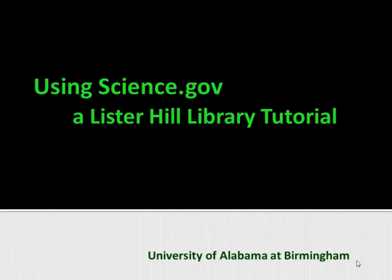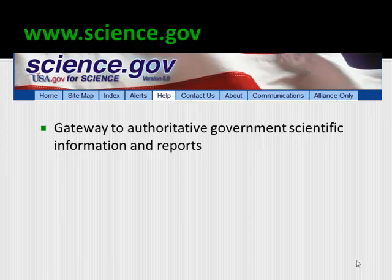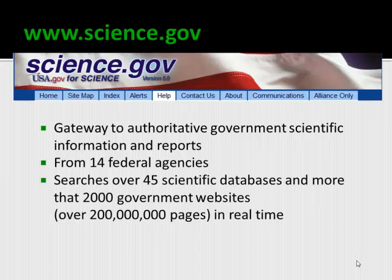This tutorial will focus on using Science.gov to find gray literature. Science.gov is a gateway to authoritative government scientific information and reports. It includes information from more than 14 federal agencies and searches over 45 scientific databases and more than 2,000 government websites — that's over 200 million pages. Unlike search engines like Google that use crawlers to index the web, Science.gov searches within databases in real time to provide results from the deep web, and then clusters the results.